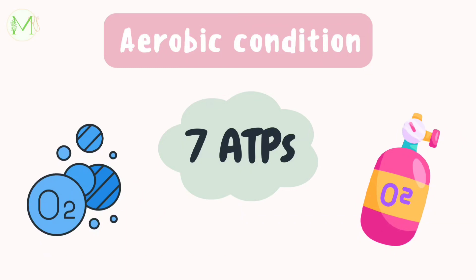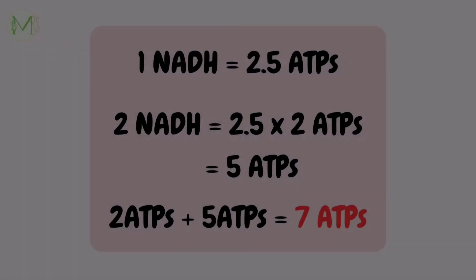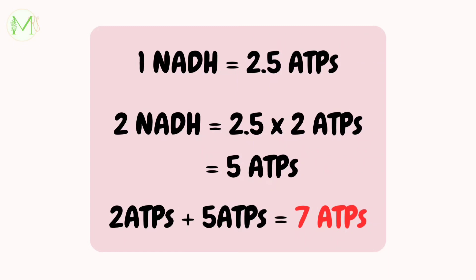Under aerobic conditions, in the presence of oxygen, we get seven ATP molecules at the end. This is because of two molecules of NADH which are generated in step five, where glyceraldehyde 3-phosphate is converted into 1,3-bisphosphoglycerate. One NADH provides 2.5 ATPs. Here we have two NADH, so as a result we get five ATPs. We already know how we got those two ATP molecules previously. Now, these five ATP molecules make it seven. So the net yield of ATP under aerobic conditions is seven.